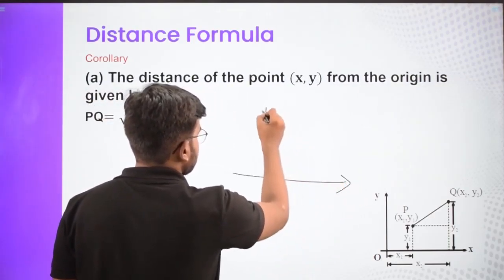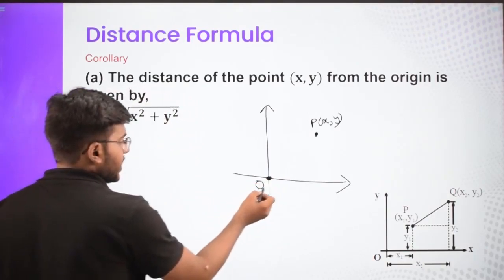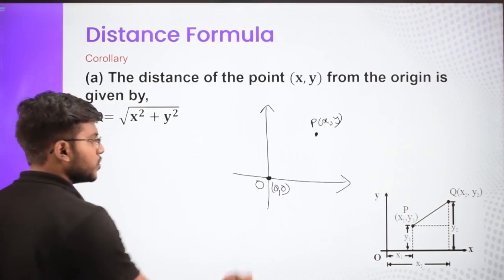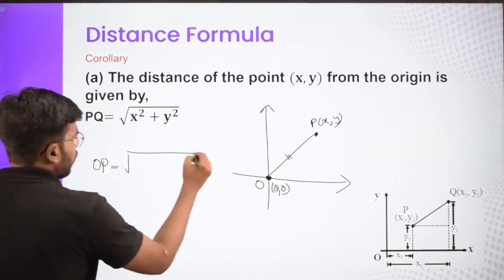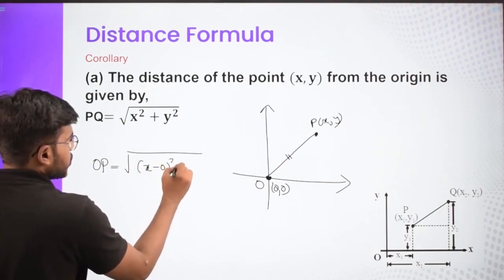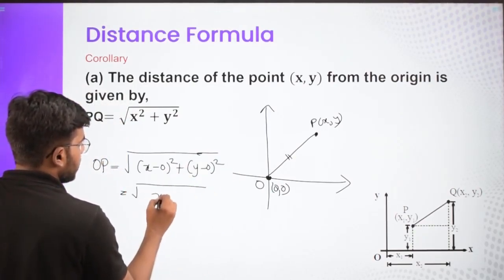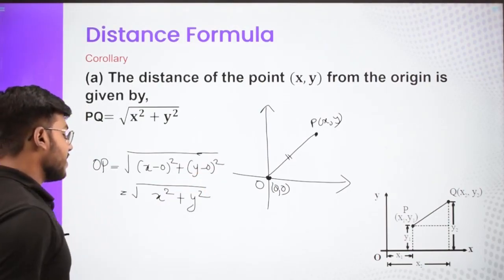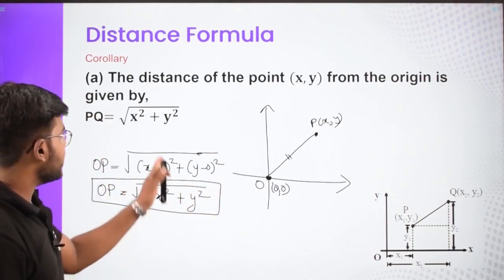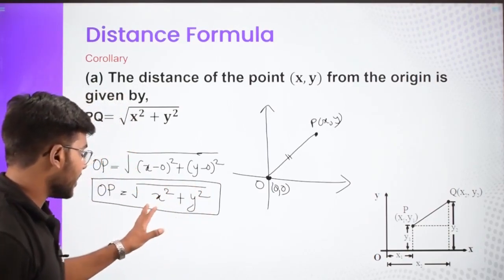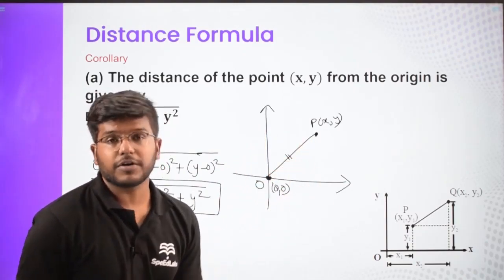If we have a point P with coordinates x comma y and we need to find its distance from the origin, we know the coordinates of the origin are 0 comma 0. So OP equals the square root of (x minus 0) squared plus (y minus 0) squared, which simplifies to the square root of x squared plus y squared. So the distance of any point from the origin is simply the square root of x squared plus y squared — the same formula with one point becoming (0, 0).